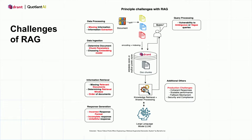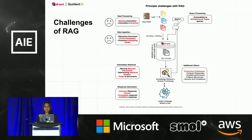Coming back to our topic, it is worth understanding and acknowledging the challenges that come along with all the goodness of RAG. During the data processing stage, we could have issues with information missing from our dataset, or information that fails to get extracted from our source, resulting in incorrect and incomplete responses. On data ingestion, there is a constant battle to determine the optimum chunking strategy, along with determining a suitable embedding model that understands the specificity and jargon used in your dataset. Having spent 17 years in the space, I can say that relevancy is an unsolved problem.